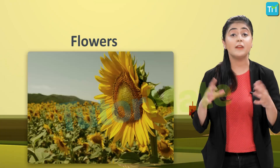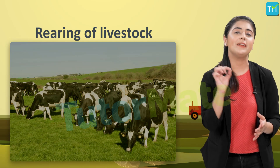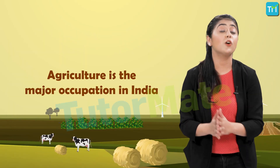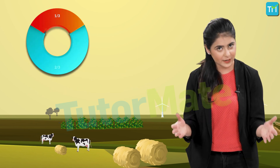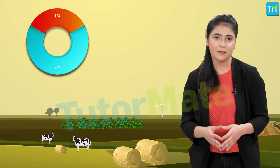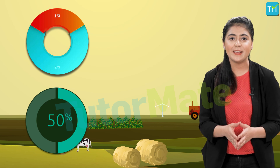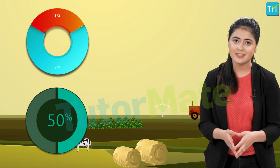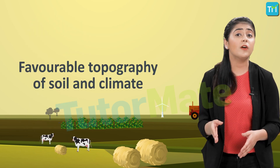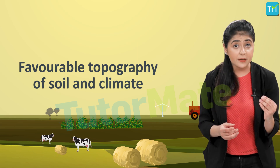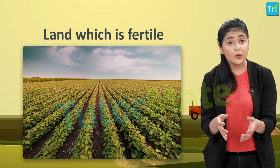Agriculture includes growing of crops, fruits, vegetables, and flowers, and rearing of livestock. Agriculture is the major occupation in India — two-thirds of India's population is still dependent on it. Globally, 50% of the world's population is also engaged in agricultural activities. Favorable topography of soil and climate are vital for agricultural activities.